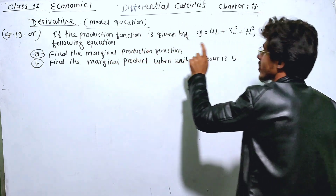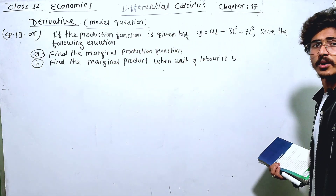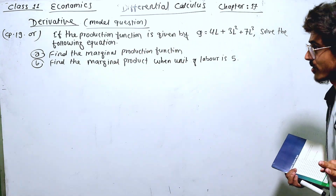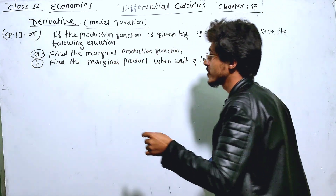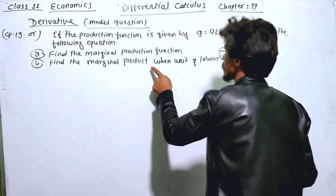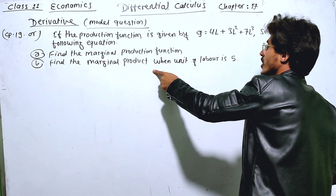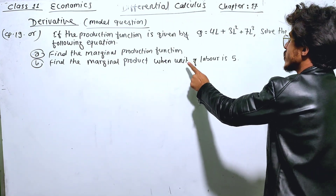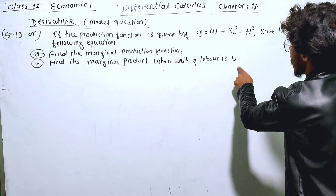First, find the marginal production function. Second, find the marginal production function when the unit of labor is 5.